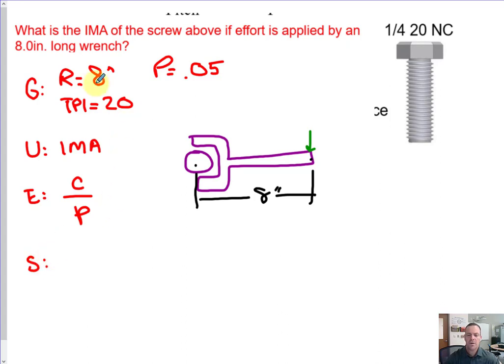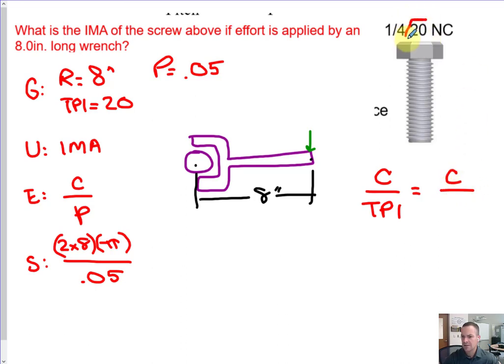When we substitute, well, we don't know the circumference, but we can find it with the radius, right? So we can do 2 times 8, so 2R times pi, divided by the pitch, 0.05.